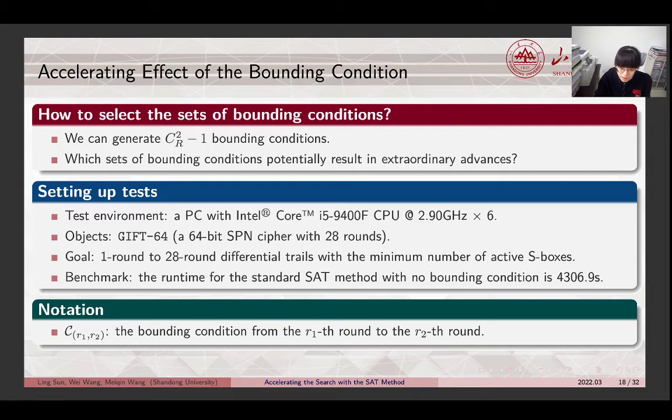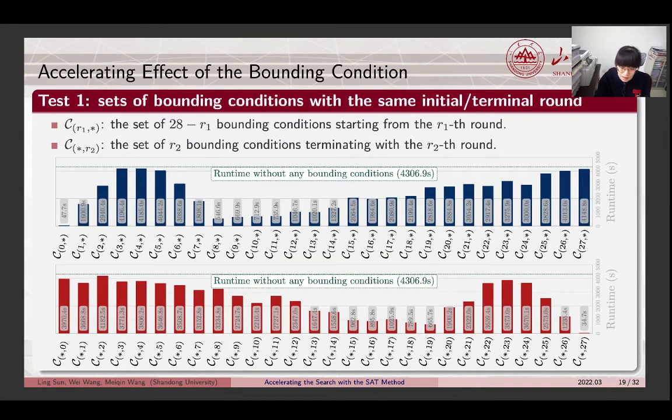We compare the runtime for solving SAT problem with different sets of bounding conditions. We set the goal as searching for the optimal differential trials with the minimum number of active S-boxes for GIFT64 from 1 round to 28 rounds. The runtime for the standard SAT method with no bounding conditions is about 43 seconds, which is the benchmark for the accelerating effect. In the following, we use this notation to represent the bounding conditions from the R1 round to the R2 round.